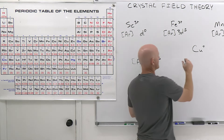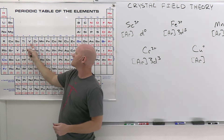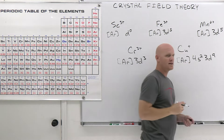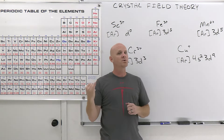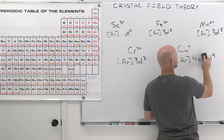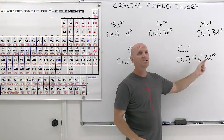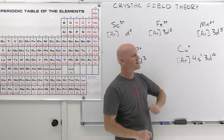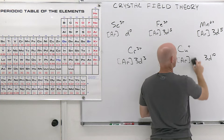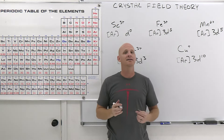For copper, instead of [Ar] 4s² 3d⁹, it's actually [Ar] 4s¹ 3d¹⁰ because completely full or half-filled subshells are more stable — this is lower energy. For Cu⁺, remove one electron: remove the 4s first, leaving [Ar] 3d¹⁰. Cu⁺ has 10 d electrons. With that review done, we're ready to dive into crystal field theory.